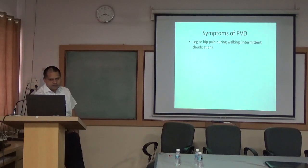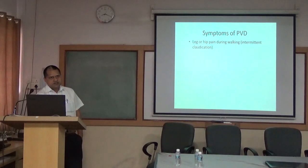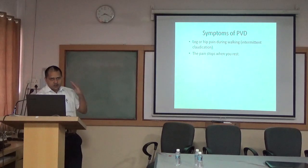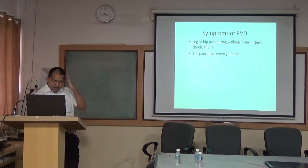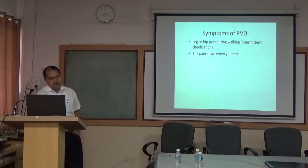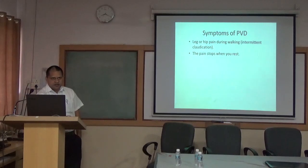Most of the times patients will have leg or hip pain during walking, called intermittent claudication; once they stop walking the pain goes. We need to note the claudication distance — if it is less than 200 meters, that patient needs treatment. If it is more than 200 meters, we can advise exercise so that collateral circulation develops and takes care of the oxygen need of that limb. If the claudication distance is less than 200 meters, the patient should be referred for further evaluation.